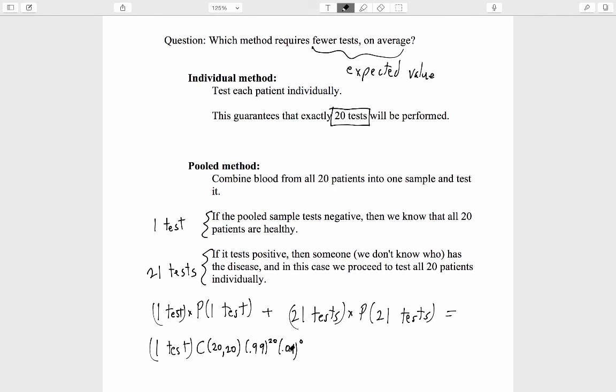This is mathematically equivalent to an experiment where we flip 20 coins. Each individual coin has a 99% chance of showing heads and only a 1% chance of showing tails. If you wanted to compute the probability that they all show heads, that's analogous to all 20 patients being healthy. This is the probability you would have to compute.